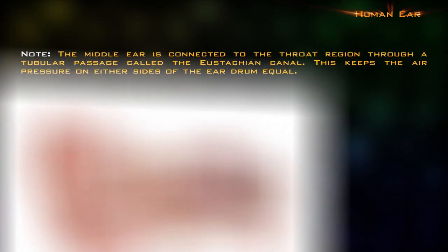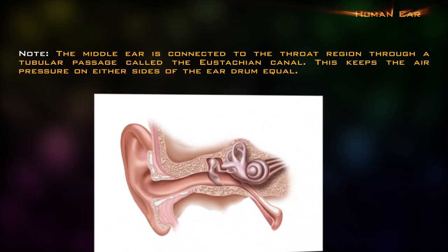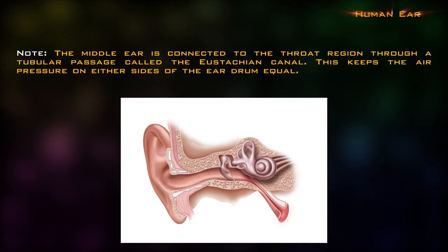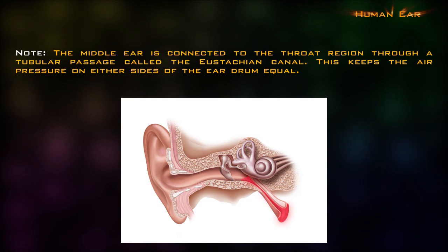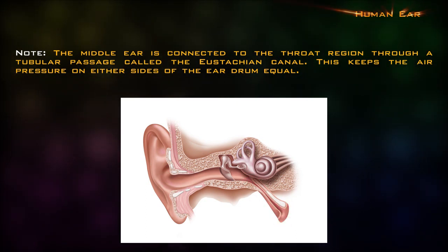The middle ear is connected to the throat region through a tubular passage called the eustachian canal. This keeps the air pressure on either side of the eardrum equal.